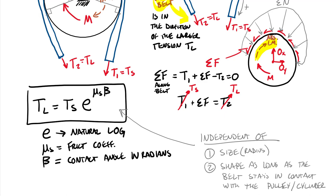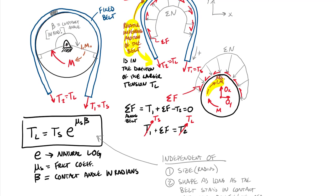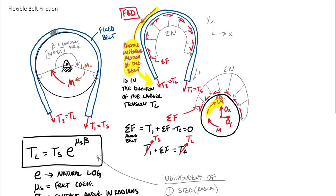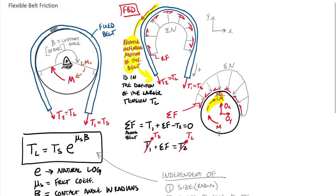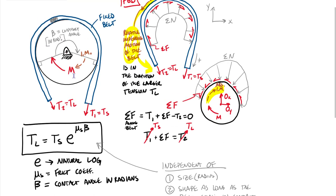The key parts of this topic: determine which is the larger and smaller tension by looking at the relative impending motion of the belt — that's always in the direction of T sub L — or by using free body diagrams with friction opposing motion. After you have those, you use the equation T sub L equals T sub S times e to the mu-beta to find the ratio of tensions, which becomes an additional equation in your system of equilibrium equations.